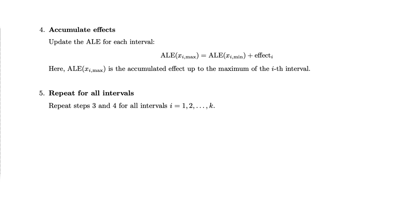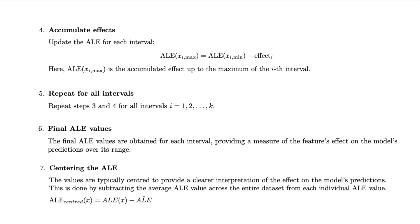Step five, we repeat steps three and four for all intervals we defined in step two. Step six is that we combine all the feature values and ALE values into a dataset. Step seven, the values are typically centered to provide a clearer interpretation of the effect on the model's prediction. This is done by subtracting the average ALE value across the entire dataset for each individual ALE value. And finally, we can plot the ALE if we want.